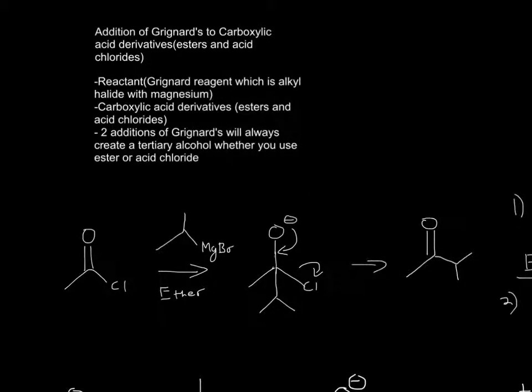For this, take the addition of Grignard's to carboxylic acid derivatives, esters and acid chlorides. The first thing we'll need is a reactant. We'll need a Grignard's reagent, which is an alkyl halide with magnesium. So this is an alkyl halide with bromine, and it can be iodine too.